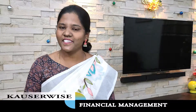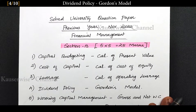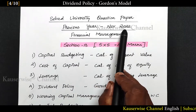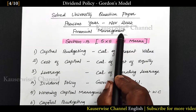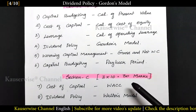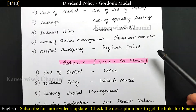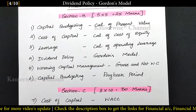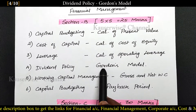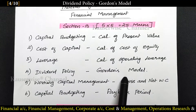Hi, welcome to my channel. This is Kouser Weiss and this is the continuation video of solving the previous year university question paper — November 2022 Financial Management. In that, we are solving Section B 5-mark questions and Section C 10-mark questions. You can find the playlist link in the description box. In this video, we are going to solve the fourth one: Gordon's model under dividend policy.